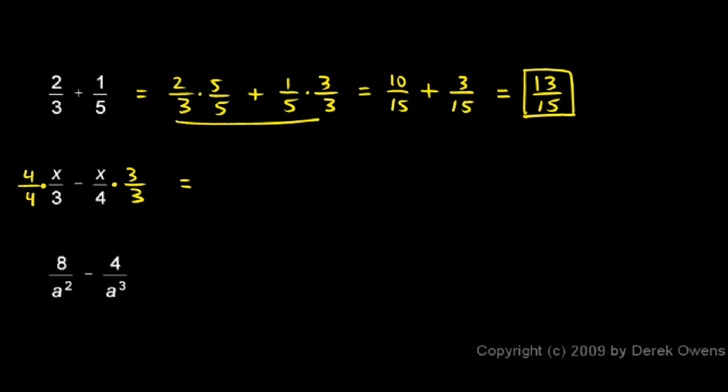And now you can see what that results in. I have 4x over 12 minus, this is 3x over 12. And now I can combine these two fractions because they're both like fractions. They're both twelfths. 4x over 12 minus 3x over 12 is simply 1x over 12. And I'll just write that as x over 12.